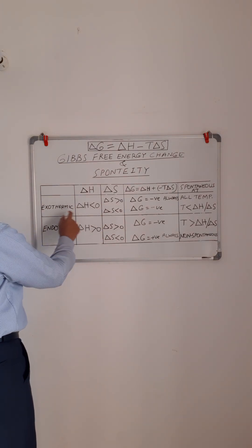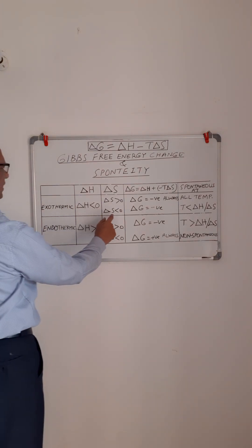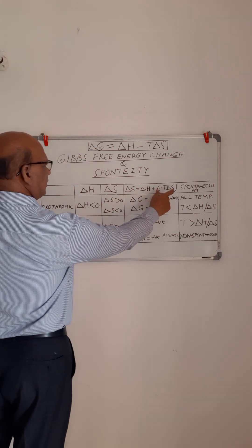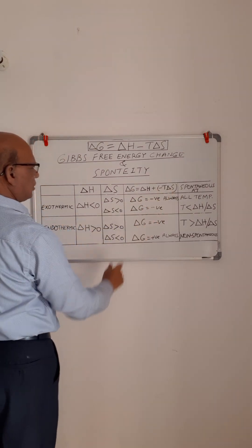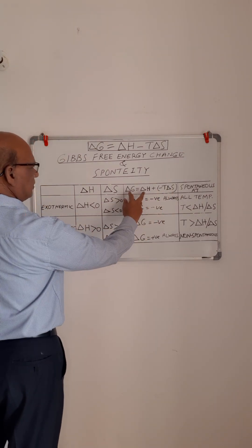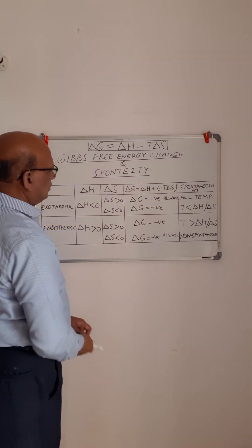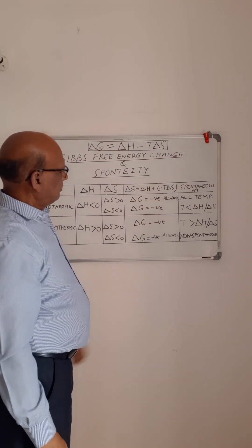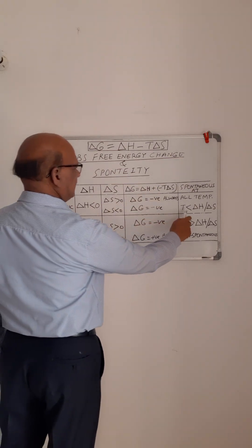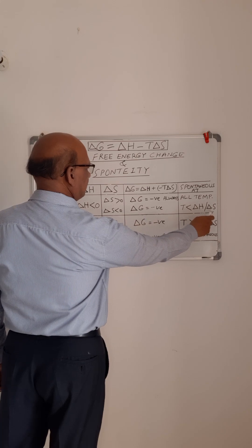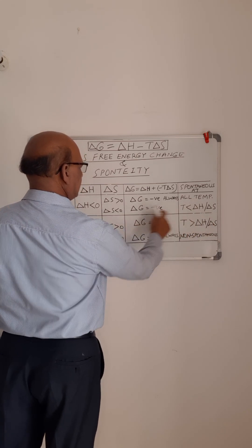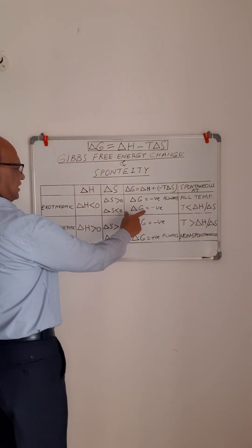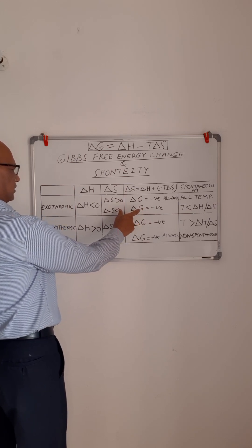The second case is for exothermic reactions when delta S is less than zero. In this case, the second term becomes positive. So for delta G to be negative, the first term has to be more than the second term. This will happen when T is less than delta H by delta S, making delta G negative and the reaction spontaneous.